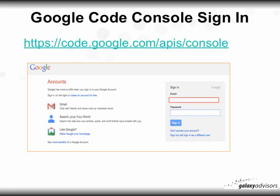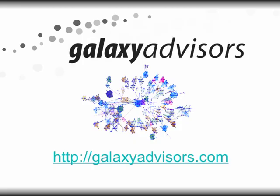You can go back and check on your key, get another key, or see your usage by going to code.google.com/apis/console. That's it from Galaxy Advisors — that was how to obtain your Google CSE key, and happy web searching.